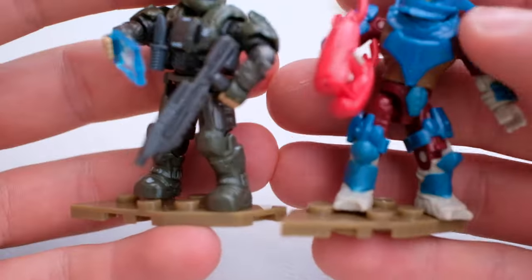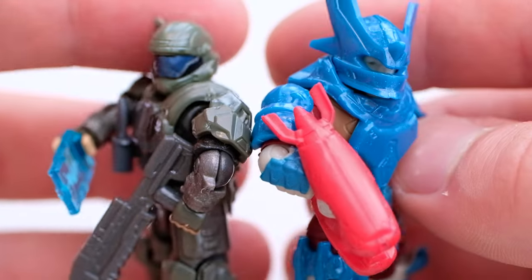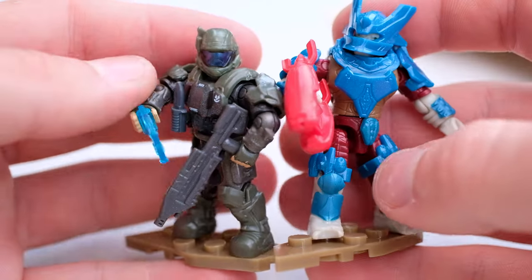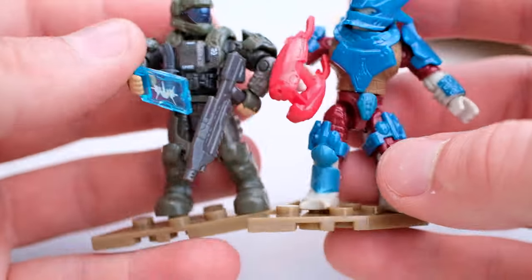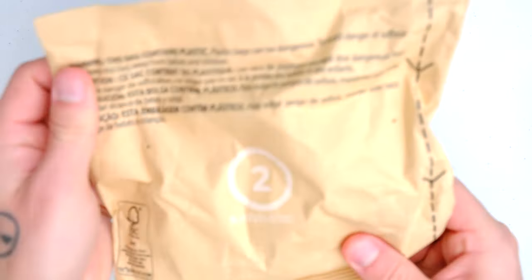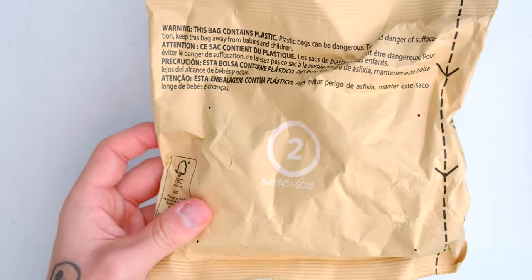They both come with desert base plates and they just look great. What a pair, well they're enemies but like what a pair. That's some of the best Halo Mega, that is some of the best figurines you can get on the market for this price. Amazing stuff.